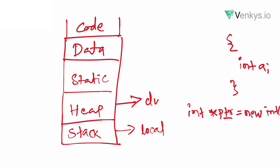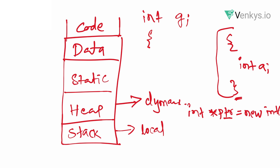The static section is memory allocated for global and static variables. A global variable, as the name says, can be accessed anywhere within your program. For example, if you declare int a inside a block, you cannot access it beyond those curly braces. But if you declare a global variable int g, you can access g inside any block. A static variable is also accessible and retains its previous value until the program exits.